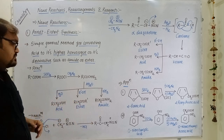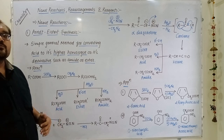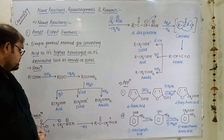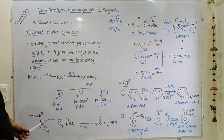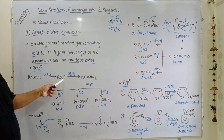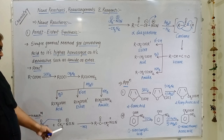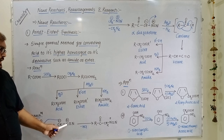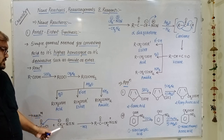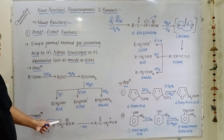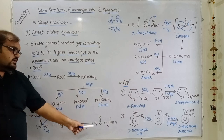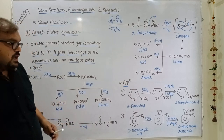Let's discuss the mechanism of Arndt-Eistert synthesis. Acid reacts with thionyl chloride to give acid chloride. When this acid chloride reacts with diazomethane, since nitrogen has a partial positive charge, CH₂ gets a partial negative charge. When CH₂ attacks the carbonyl carbon of acid chloride, Cl is lost as HCl and we get an intermediate molecule.